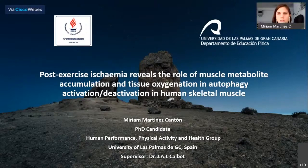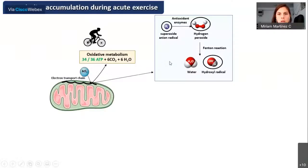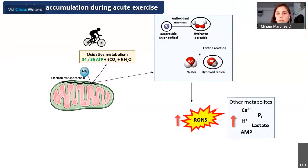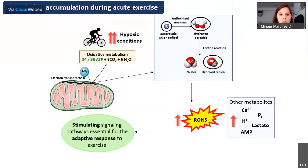This research is entitled 'Post-exercise ischemia reveals the role of muscle metabolite accumulation and tissue oxygenation in autophagic activation and deactivation in human skeletal muscle.' Acute exercise to exhaustion produces several metabolite accumulations such as reactive oxygen and nitrogen species, calcium, hydrogen ions, and inorganic phosphate. These metabolites are exacerbated under hypoxic conditions, causing oxidative damage, and are capable of stimulating signaling pathways essential for the adaptive response to exercise.